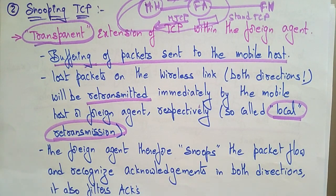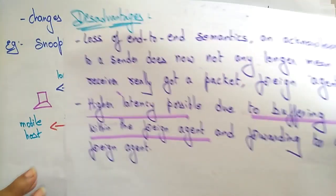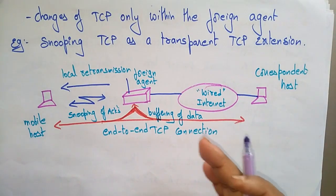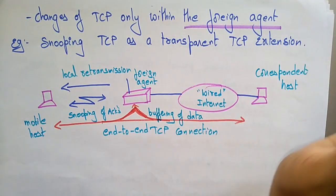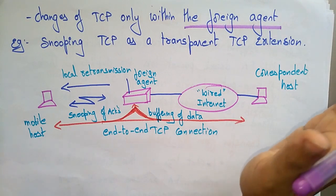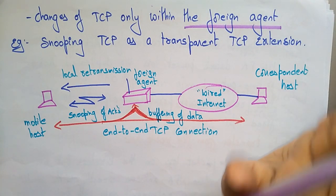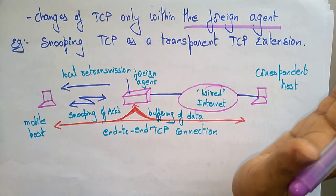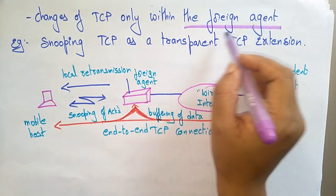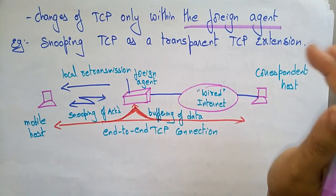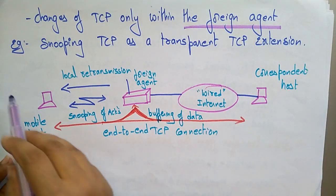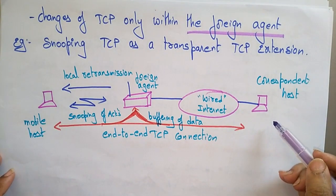The foreign agent snoops the packet flow and recognizes acknowledgements in both directions; it also filters acknowledgements. The important thing to remember is that whatever changes are made to TCP in snooping are only within the foreign agent. The snooping TCP operates as a transparent TCP extension, so all TCP modifications happen within the foreign agent only.